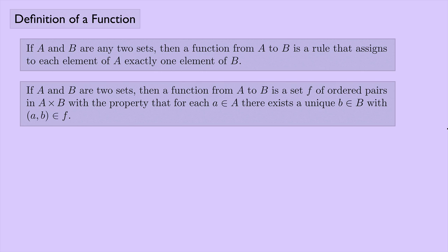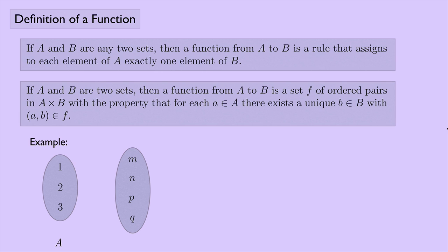Let's look at an example and see how we would use each of these definitions. Suppose we have a set of numbers {1, 2, 3} — I'll call that set A. And then I have a set of letters {M, N, P, Q} — we'll call that set B. Then I'm going to let 1 be assigned to M, 2 be assigned to N, and 3 be assigned to Q. This will be my function F.